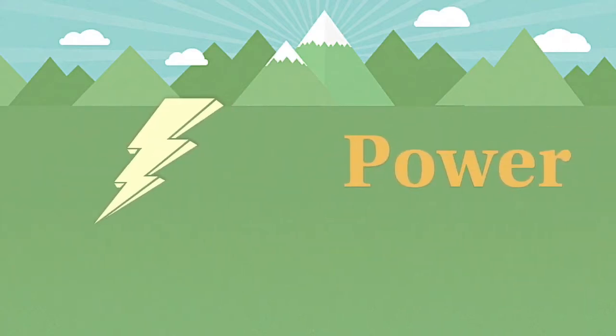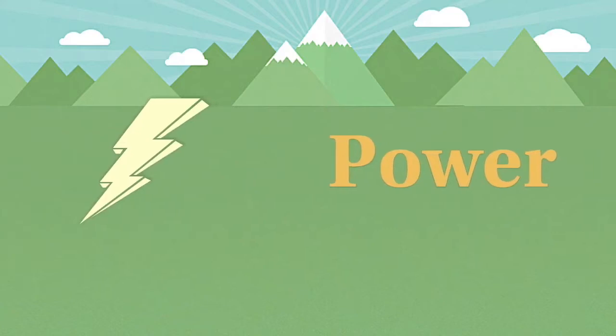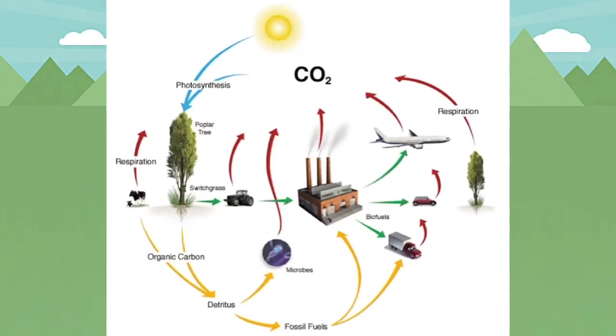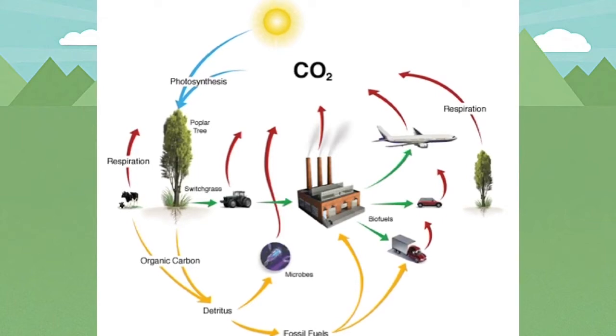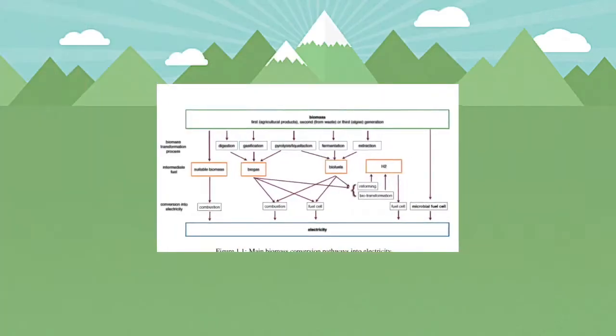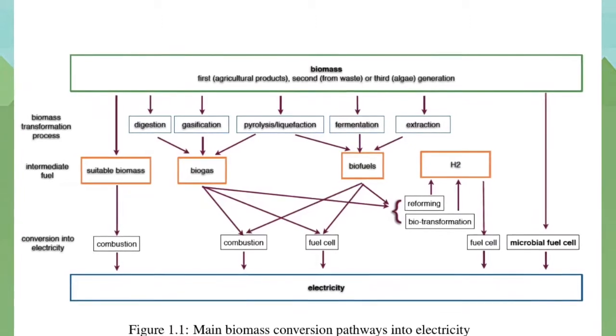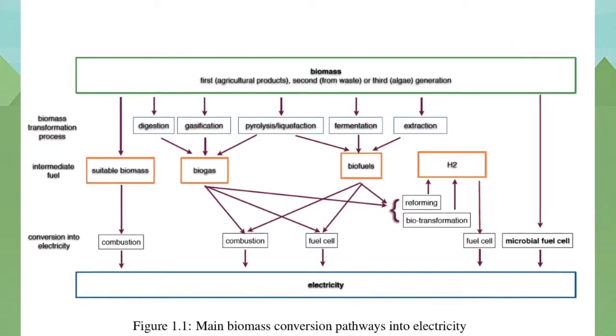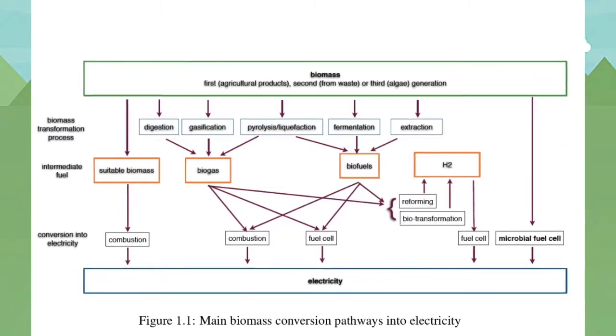These bacteria eat biomass and generate power. Most of our power usage comes from biomass. Biomass is being created by the power of the sun through photosynthesis. There are a few tricks needed to convert biomass into electricity, but microbial fuel cells skip them all.